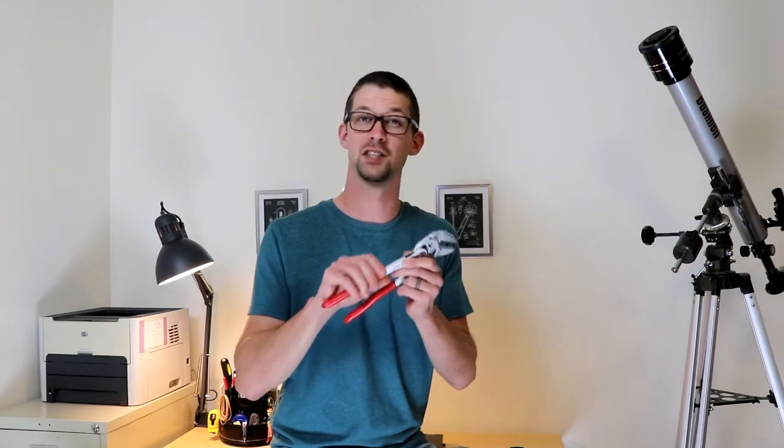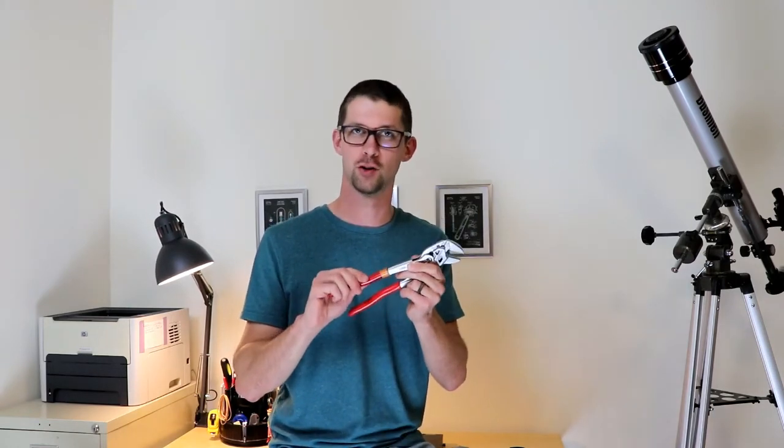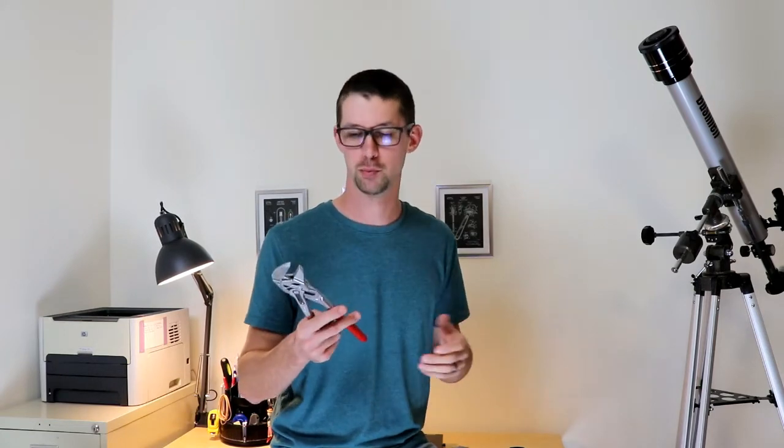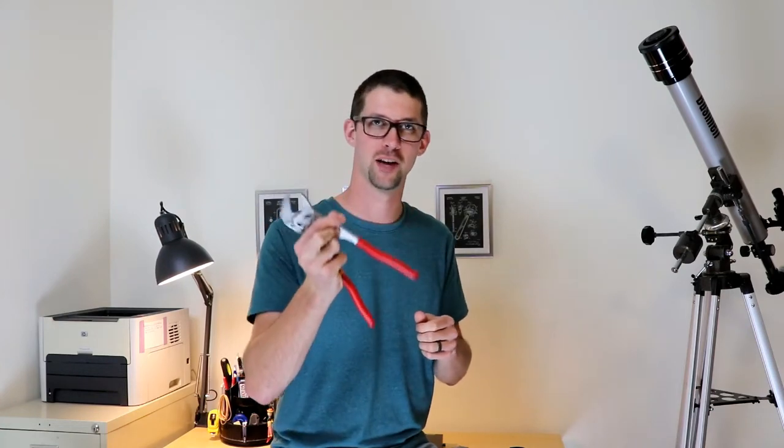A few different variations that these come in are a version that has insulated handles for electrical work as well as a comfort grip handle that just has a little more bulk and a little more cushion. I personally prefer the more streamlined look and feel of the simple red rubber dipped handles.